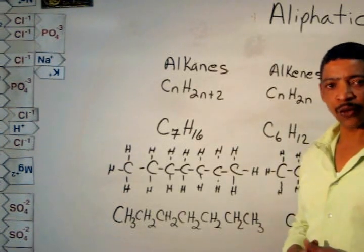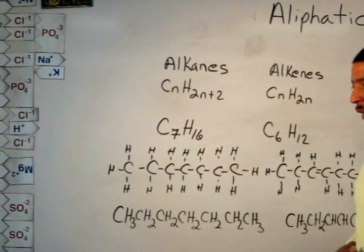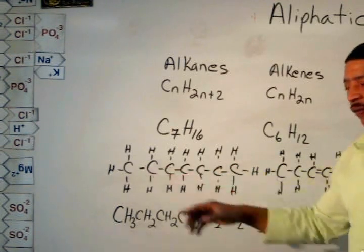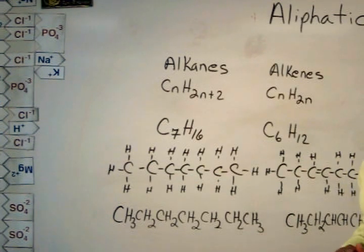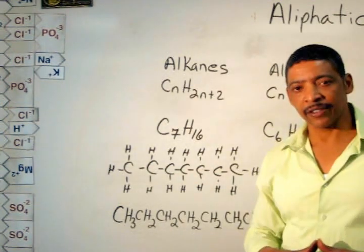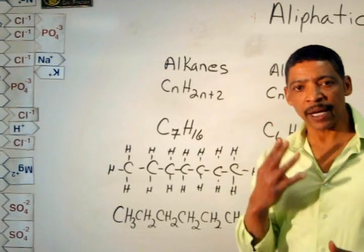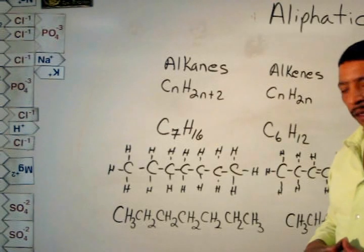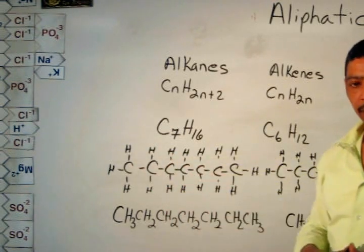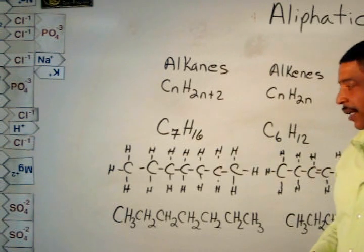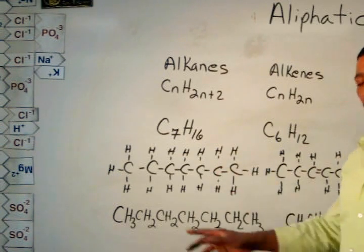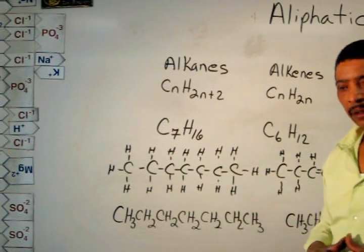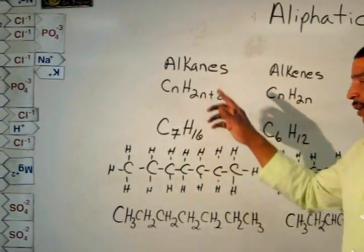To write the structural formula for heptane, simply write 7 carbon atoms connected by covalent bonds. Since carbon is an atom that will form 4 bonds, in addition to the carbon-to-carbon bond, there must be carbon-to-hydrogen bonds. This compound contains all single bonds. Therefore, heptane is an alkane.